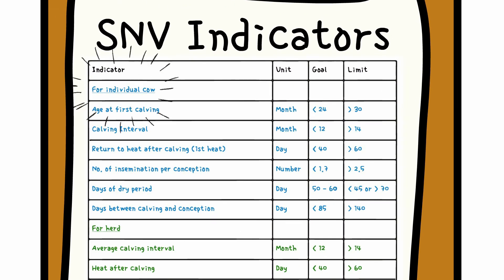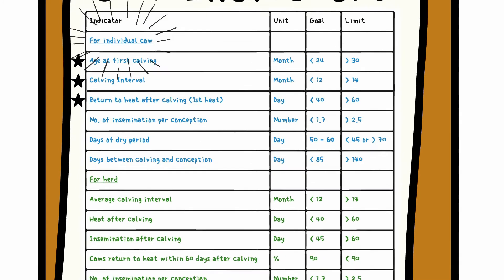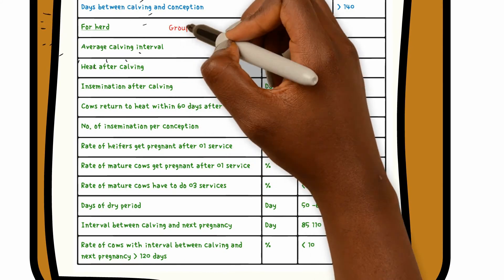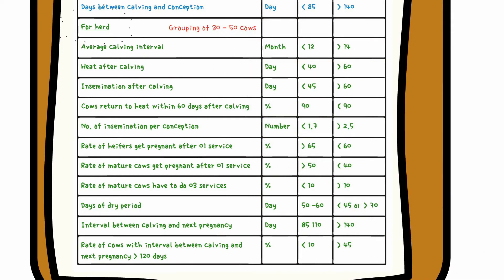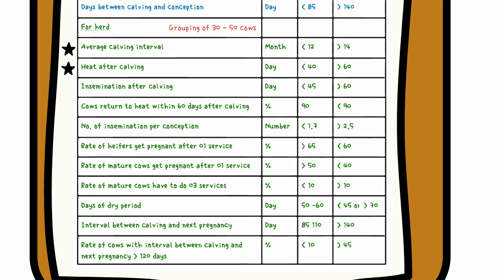For individual cows this would include the age at first calving, the calving interval, and days to first oestrus. As fertility depends on probability, cows need to be grouped into a minimum of 30 to 50 calf groups to get average figures that are meaningful. This can be done, for example, by village or by AI service provider. For these groupings, looking at average figures for calving interval, first heat after calving, the average number of days to first AI or service, and average number of services per pregnancy or conception, allows advisors to identify and investigate problems.